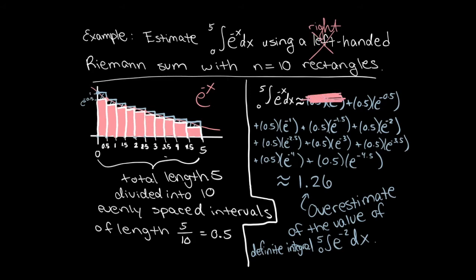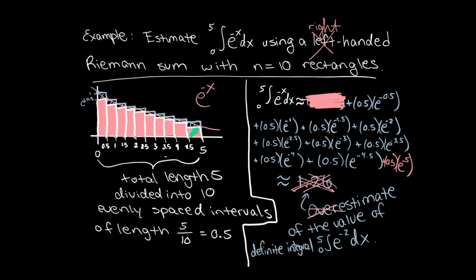For the right-handed Riemann sum, the first term from e to the 0 completely goes away, and rectangle number 1 has a height of e to the minus 0.5. Rectangle number 2 is e to the minus 1. Rectangle number 3 has a height of e to the minus 1.5. Because we're using the right endpoint for each interval, by the time we get to the end, the rightmost endpoint of 5 must be included because it is the height of the last rectangle. The final value for the right-handed Riemann sum is approximately 0.77.